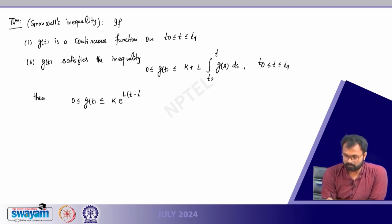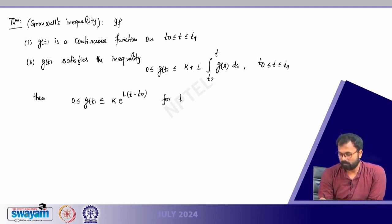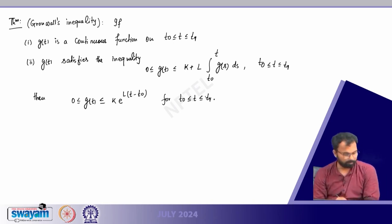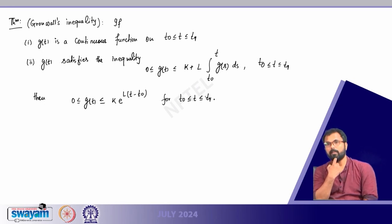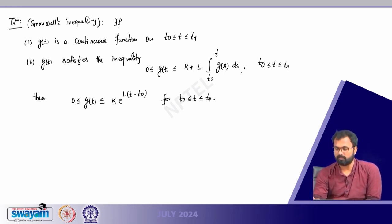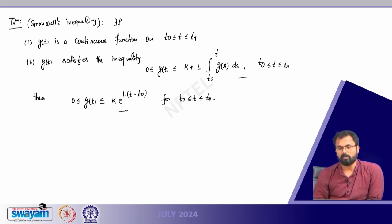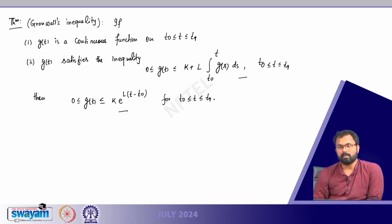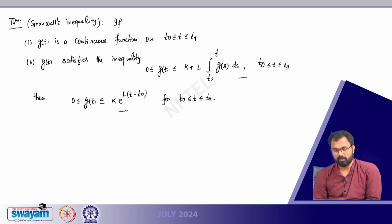The second condition is that G(T) satisfies the inequality 0 ≤ G(T) ≤ K + L * integral from T_0 to T of G(S) dS, for T_0 < T ≤ T_1, where K and L are both constants and G(T) is a non-negative function. If G(T) is non-negative and satisfies this inequality, then G(T) ≤ K * e^(L*(T - T_0)). This is a classical version of Gronwall's inequality.